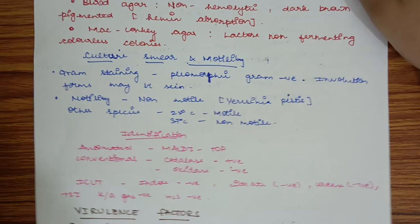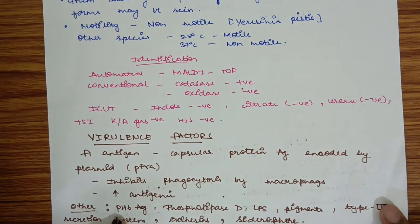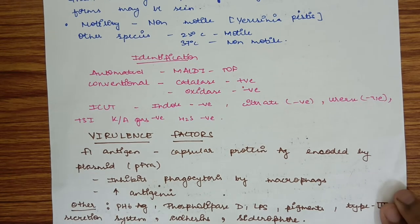Identification may be by automated or conventional methods. Automated methods use Malditof. Conventional methods include catalase, oxidase, ICU, and TSI (triple sugar iron). It is catalase positive, oxidase negative, ICU indole negative, citrate negative, urease negative. In triple sugar iron, alkali by acid and gas negative, H2S negative. We can remember this by: everything negative except catalase.